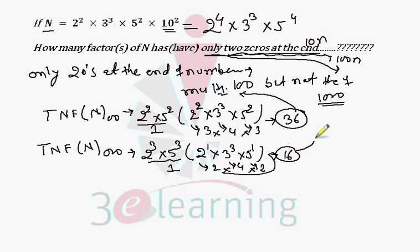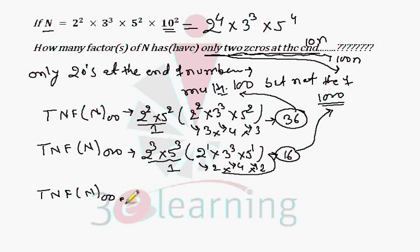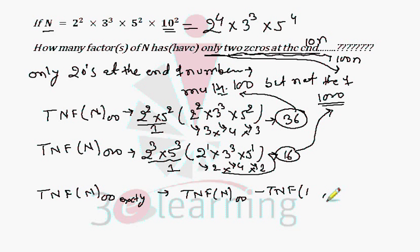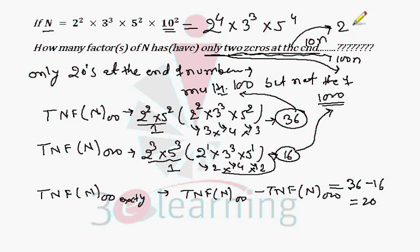There are 16 factors which are multiples of 1000, ending with 3 zeros minimum. We are looking for only two zeros, so: total factors ending with double zero minus total factors ending with triple zero. That is 36 minus 16, so the answer is 20.